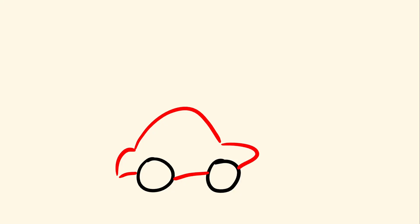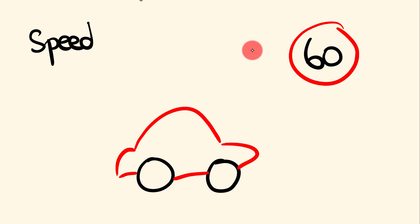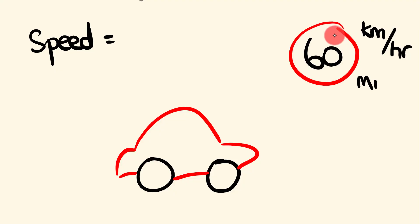First off, I'm going to show you how most people identify speed and the calculation involving it — and how you can really easily remember the formula. As you drive along a road, you see speed limit signs telling you how fast you should be going. This car should be going 60 — the speed is equal to 60. In Australia this car would be going 60 kilometers per hour, or in the US, 60 miles per hour.